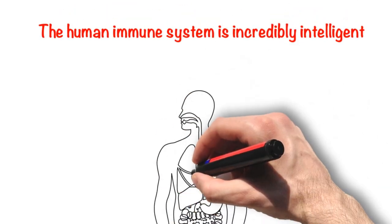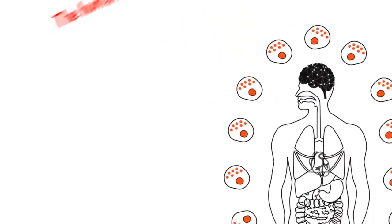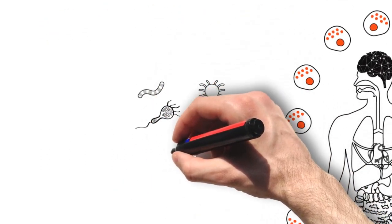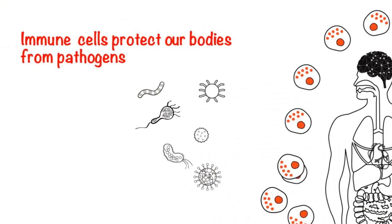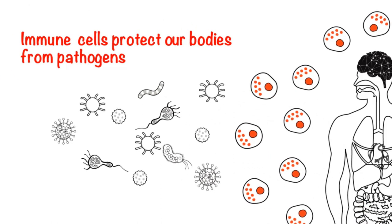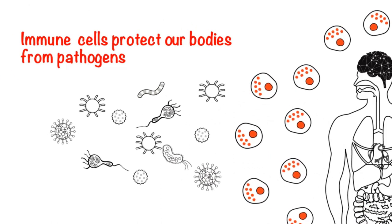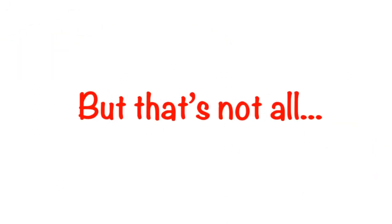The human immune system is incredibly intelligent. Our immune cells act as our foot soldiers, our front line of defense against pathogens, clearing and removing harmful toxins from our bodies.